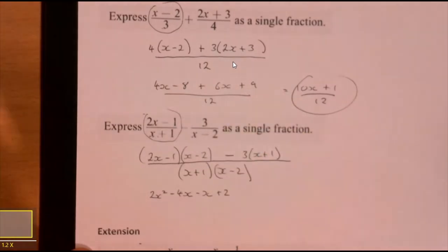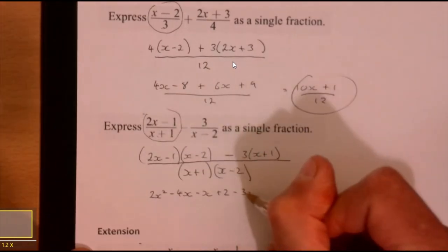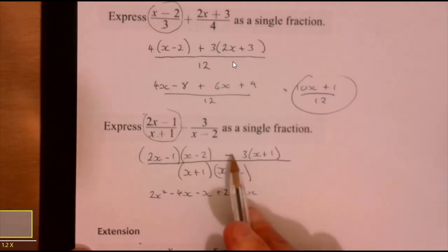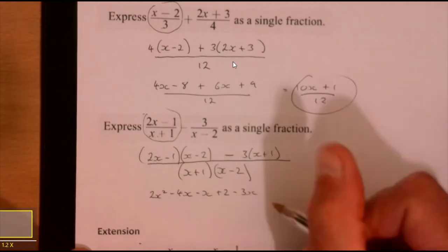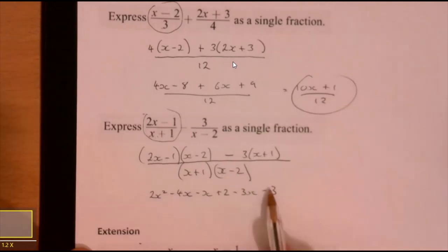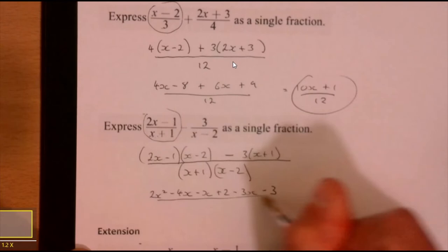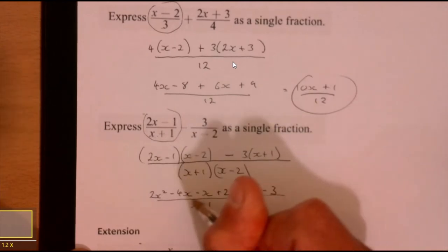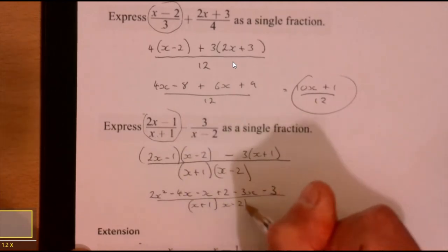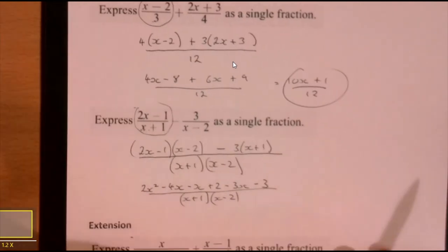And then I've got minus 3x. Be careful here, I know a lot of people make this mistake. Minus 3 times 1 to be minus 3 at the end. Loads of people put plus. Just carry that bit down, and then all of that is now, I'm not even going to bother sorting out the denominator there, okay?